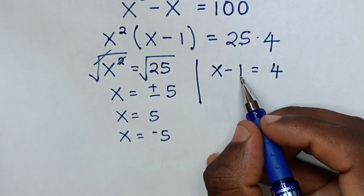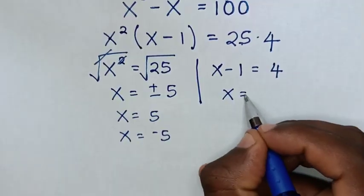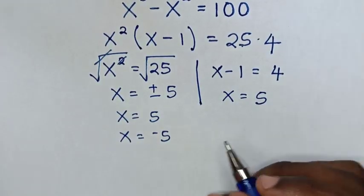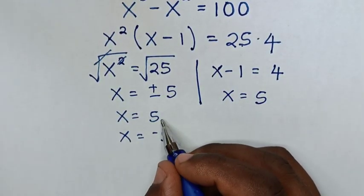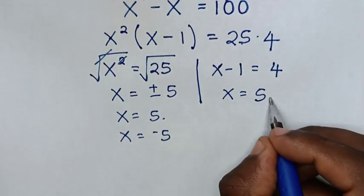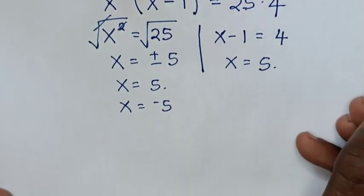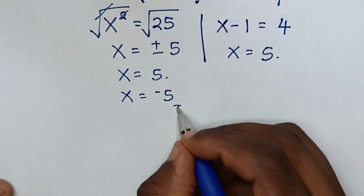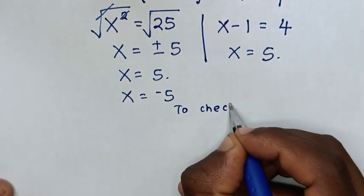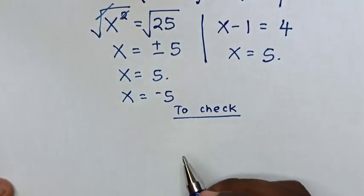From the equation x minus 1 equals 4, we take negative 1 to the right side, so x is equal to 5. Here x equals 5 and here x equals 5 — they are common.